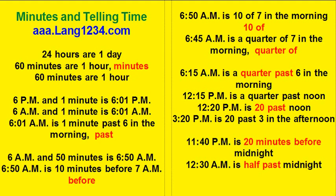Six a.m. and fifty minutes is 6:50 a.m. Six fifty a.m. is ten minutes before seven a.m. Six fifty a.m. is ten of seven in the morning.